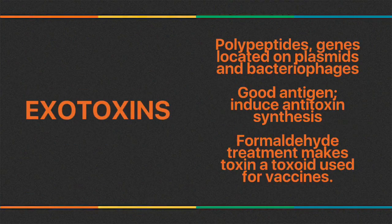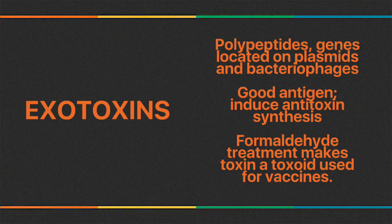Exotoxins are produced by both gram-negative and gram-positive bugs. They are polypeptides and their genes are located on plasmids or bacteriophages. They are more toxic than endotoxin and are very good antigens, inducing synthesis of antibodies called antitoxins. Treatment of exotoxin with formaldehyde, acid, or heat converts it to a toxoid, which is used as a vaccine.